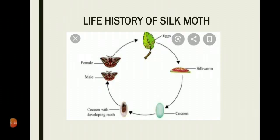The silk moth is a type of insect, and its life history is very interesting because the silk moth is not formed directly from eggs. The silk moth passes through a worm-like stage called larva or caterpillar, and an encased form called pupa during its development between the hatching of the egg and the formation of the adult silk moth. So the cycle goes: egg → larva or caterpillar → pupa → adult silk moth.